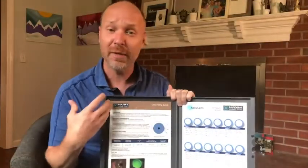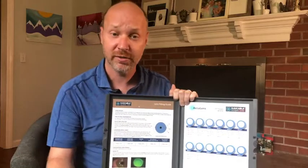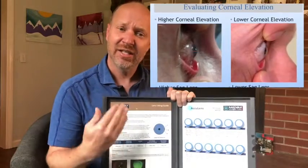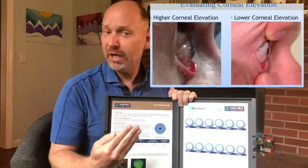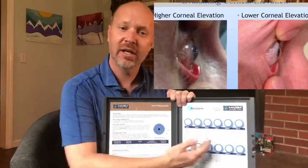If you've learned from myself, or you visited the lab, or one of our other consultants, we also teach you about looking at the elevation of the cornea. Just eyeball it from the side and get a gauge on whether that cornea is really elevated or really not — and that will help you also decide which lens to start with.